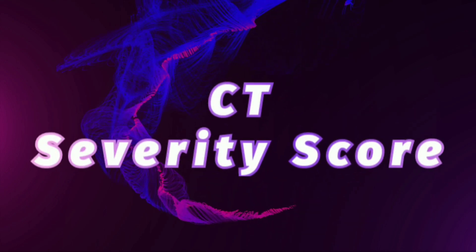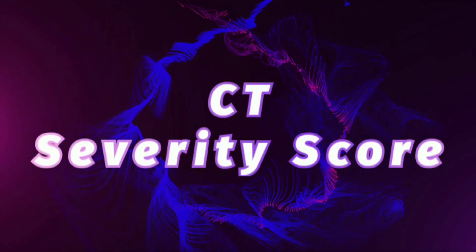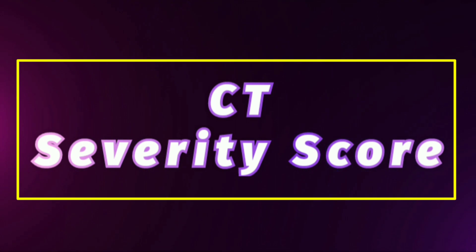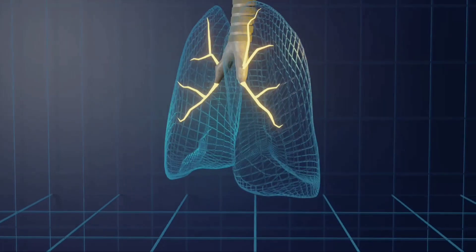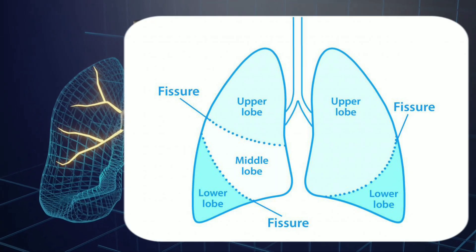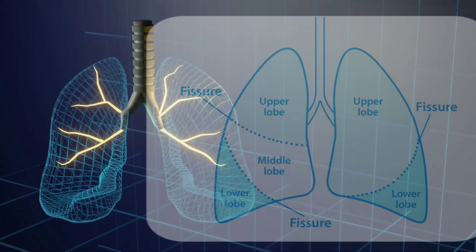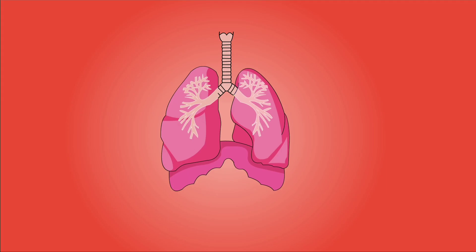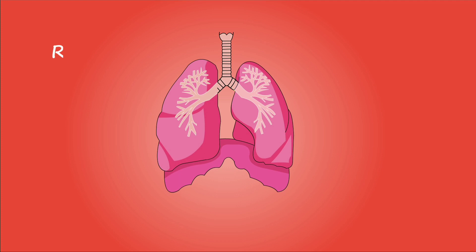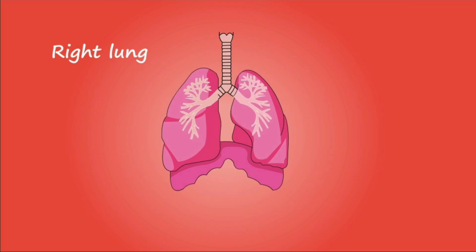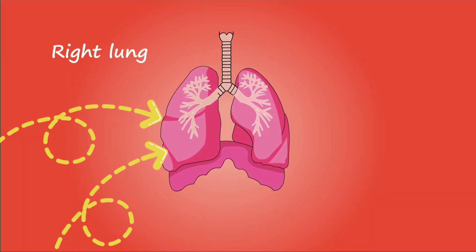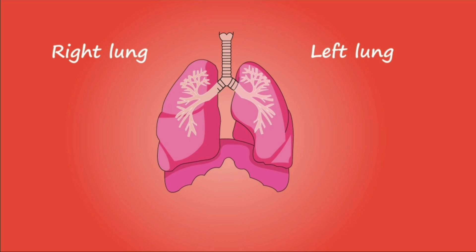The most important thing is your CT severity score. Note that our lungs consist of five lobes, and thin walls of tissue called fissures separate the different lobes. The right lung is divided into upper, middle, and lower lobes by horizontal and oblique fissures, while the left lung has two lobes — upper and lower — divided by an oblique fissure.